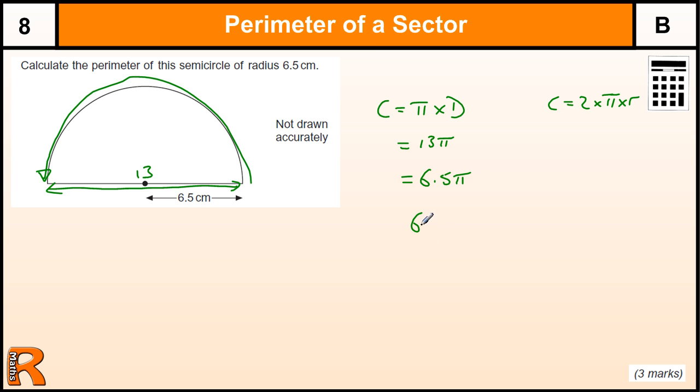So we could just write 6.5 pi plus 13, and that would be a perfectly valid answer.